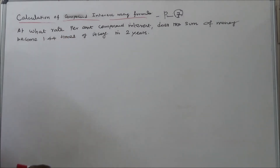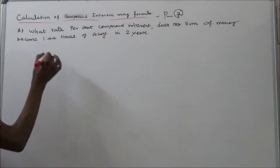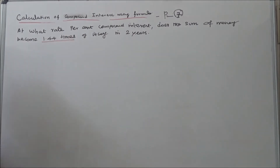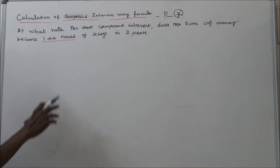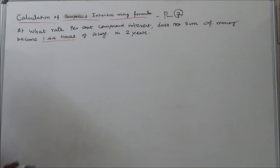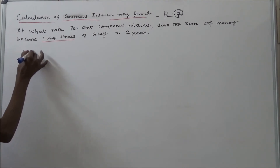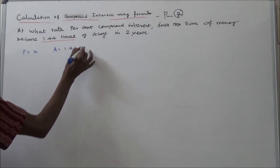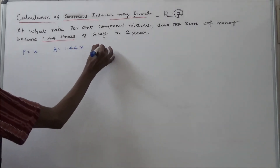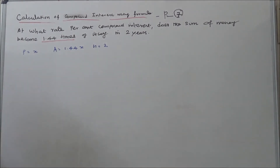At what rate percent compound interest does a sum of money become 1.44 times of itself in two years? Here, P value is not given, A value is not given, and N is equal to two years. A is equal to 1.44 times. Let me take P is equal to X, so A is equal to 1.44X, and N is equal to two.